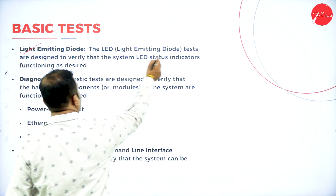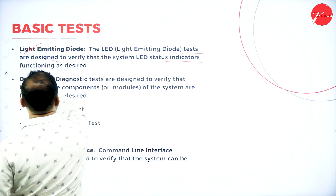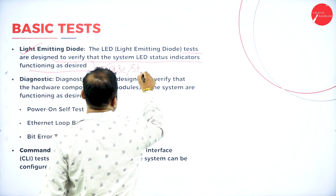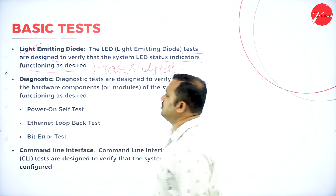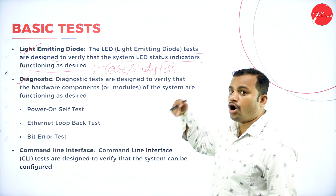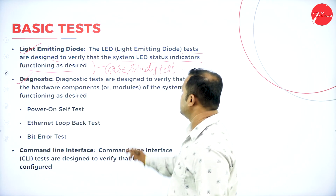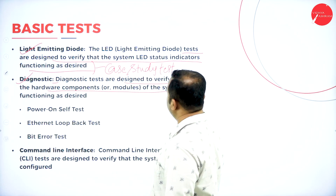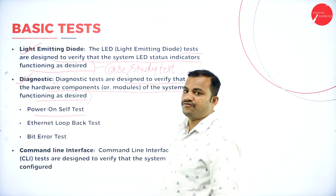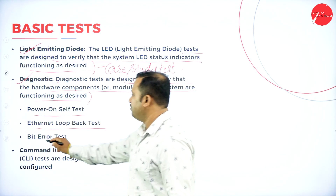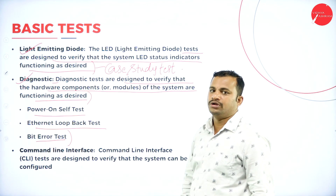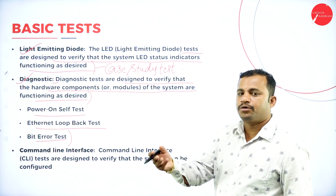Then, light emitting diode test. The LED tests are designed to verify that the system LED state indicators are functioning according to the design. Then we have a diagnostic test — whether everything is working properly or not is checked with automated operations. These are designed to verify that the hardware or software components, including modules of the system, are functioning according to the desired options: power-on self-test, Ethernet loopback test, bit error test. All these are carried out automatically.